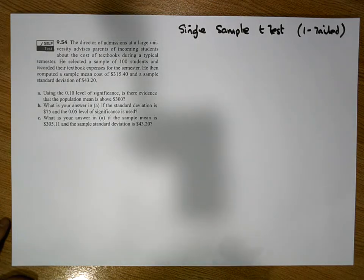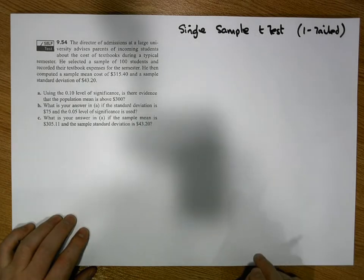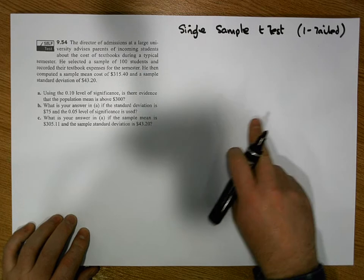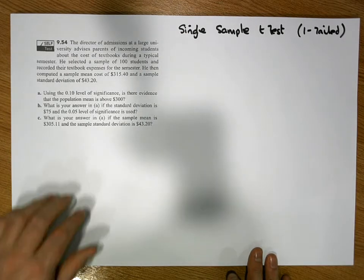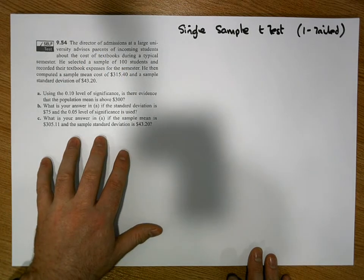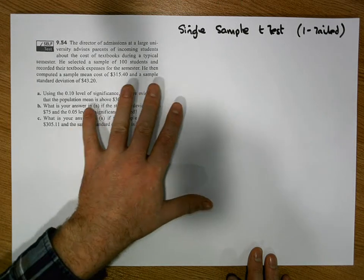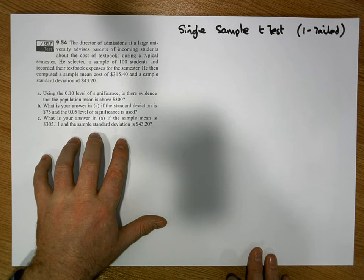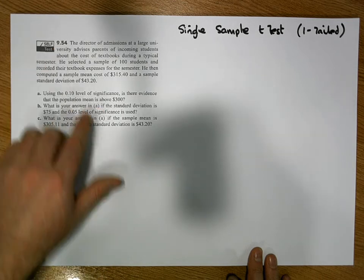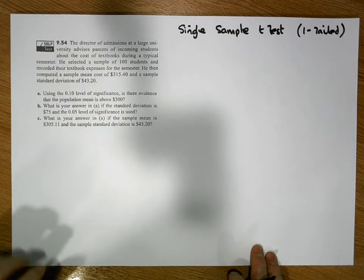Hi guys, this is Jonathan Lambert with the Mathematics Development and Support Service at the National College of Ireland. This short video is going to walk through the process for undertaking a single sample t-test — in particular, a one-tailed test. The scenario has been taken from the classic text by Berenson and Levine, Business Statistics, chapter 9, self-test question 9.54.